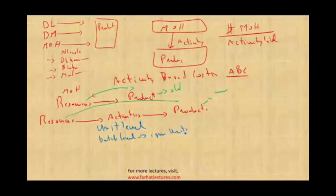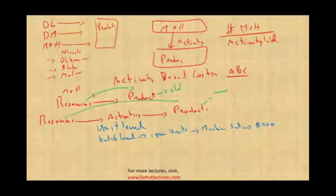An example of batch-level cost is machine setup. When we set up the machine to create a specific product, let's assume it costs us $500. Once we spend that $500, we might produce one unit, 500 units, or 5,000 units. The frequency of the cost is only once, and that's at the batch level.